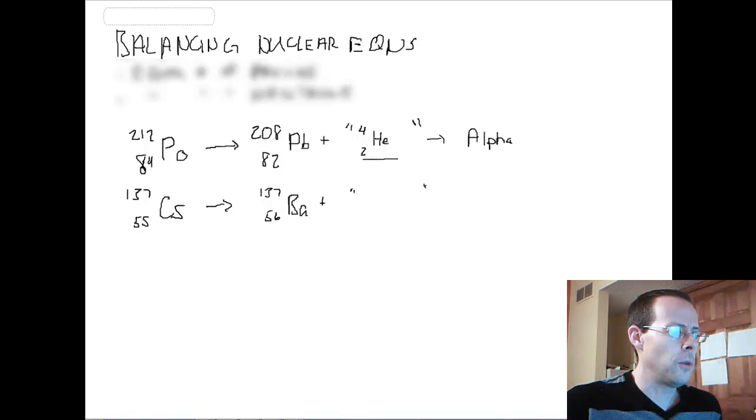Again, we want to know what we form, so we're going to fill in the blank. We have 55 protons on the left, but 56 protons on the right, which means our net is negative 1, because minus 1 plus 56 equals 55. So we gained a proton somehow, so our particle is going to have to take care of that gain. On the top, notice our mass number stays the same, so our mass number doesn't change. Hopefully you'll recognize that 0 minus 1 is an electron, so the type of decay is beta decay.